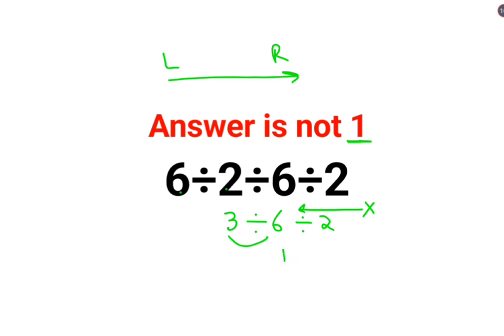So 3 divided by 2 is 1 upon 2, divided by 2. Now whenever you have division between two numbers, you will apply the rule of KCF, where K stands for keeping the first number as it is, C stands for changing the division sign to multiplication, and F stands for flipping or taking reciprocal of 2, which is 1 upon 2.